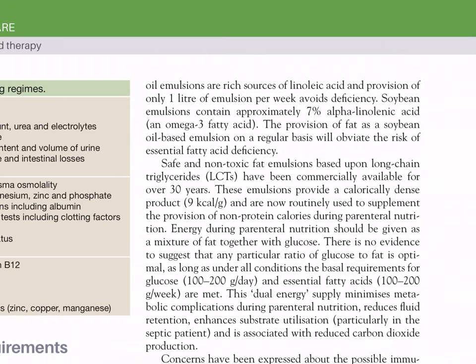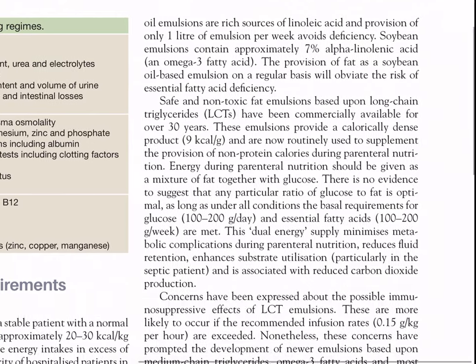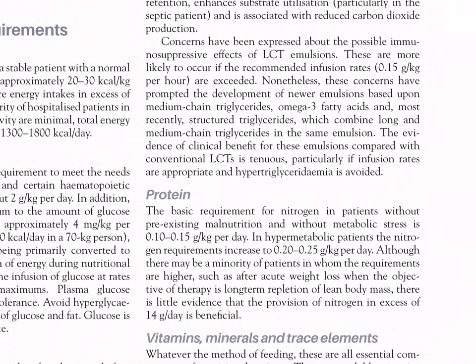Energy during parenteral nutrition should be given as a mixture of fat and glucose. There is no evidence that any particular ratio of glucose to fat is optimal, as long as basal requirements for glucose (100–200 g/day) and essential fatty acids (100–200 g/week) are met. This dual energy supply minimizes metabolic complications, reduces fluid retention, enhances substrate utilization particularly in the septic patient, and is associated with reduced carbon dioxide production. Concerns about immunosuppressive effects of LCT emulsions are more likely if recommended infusion rates of 0.15 g/kg/hour are exceeded.